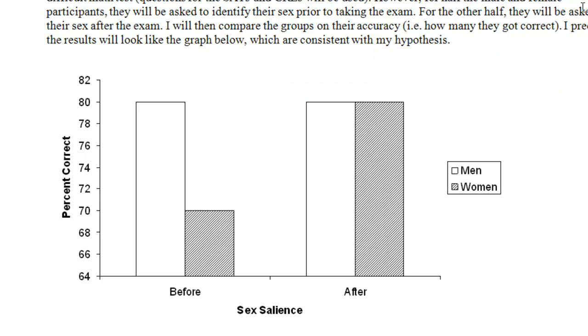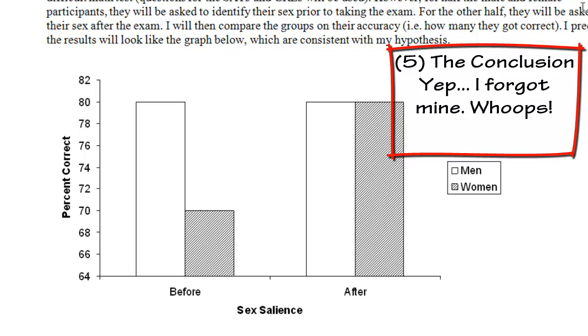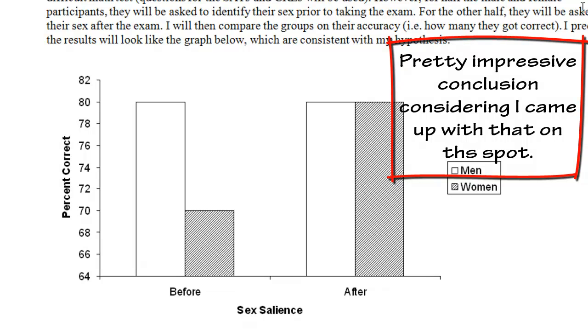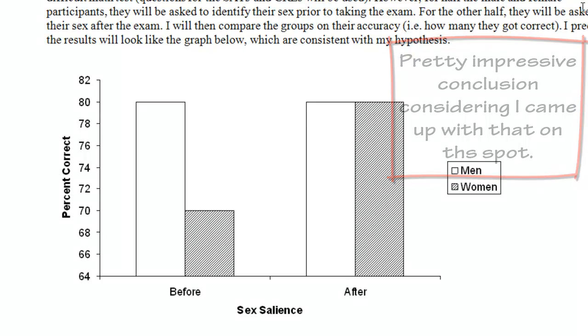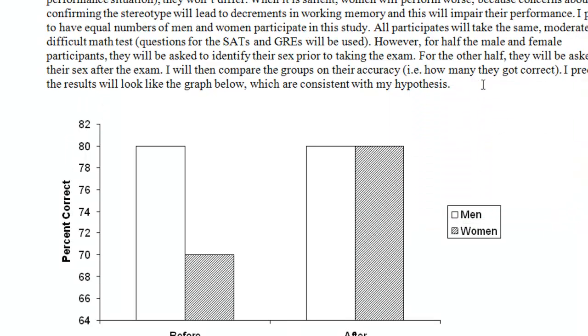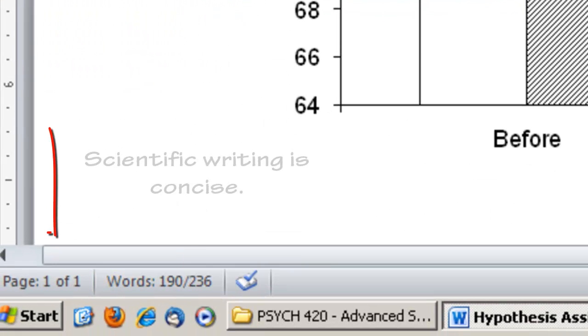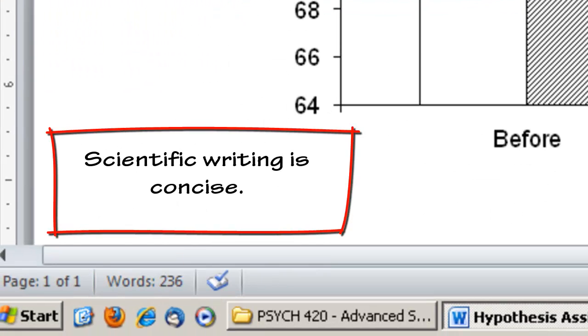This hypothesis actually doesn't have a concluding statement. The concluding statement would say something perhaps like, this is important because with this understanding of how the salience of sex affects performance on math and science abilities, we can better understand differences in sex in the classroom, or something like that. So this is the basics of how you do the 300-word hypothesis assignment. You'll notice that this hypothesis assignment is actually only 190 words. And so it's easy to do this in only 300 words.